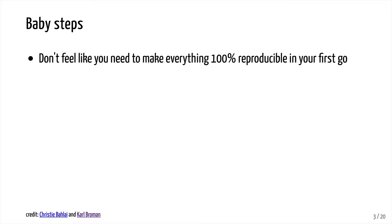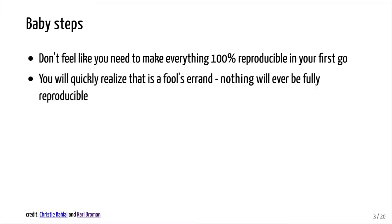The first point I want you to keep in mind is don't feel like you need to make everything 100% reproducible in your first go. That's a huge goal. We might like to be smug and think all research should be reproducible, but as we've already discussed in the previous tutorials, that's a really high bar to try to reach. You'll quickly realize that's a fool's errand — nothing will ever be fully reproducible.